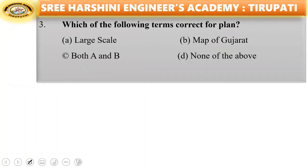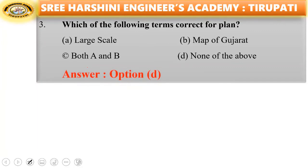Third question: which of the following terms is correct for a plan? Options include large scale map of Gujarat, both A and B, none of these. The answer here is none of these.